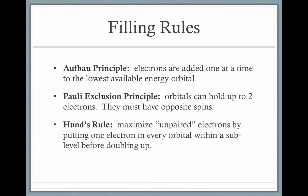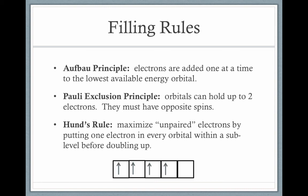Finally, there's Hund's rule. Hund's rule tells us that we must maximize unpaired electrons by putting one electron in each orbital within a sublevel before doubling any up. For instance, here's a sublevel with five orbitals — since it has five orbitals, it must be a d sublevel. When filling this sublevel, we first put one electron with the same spin in each orbital before putting two in any orbital.